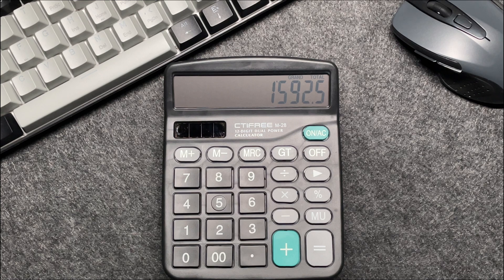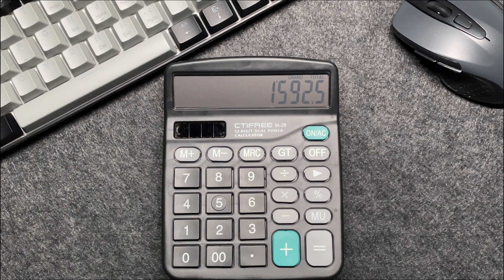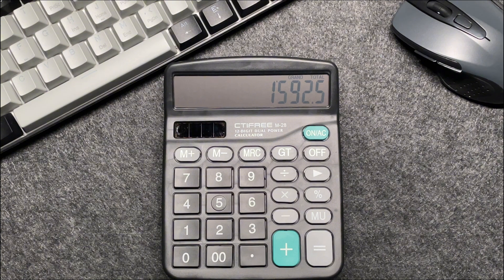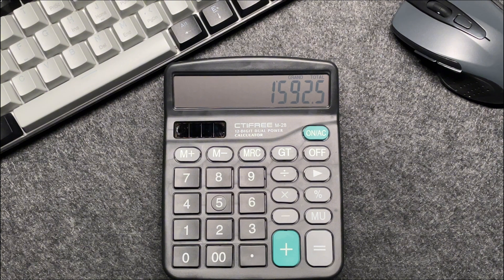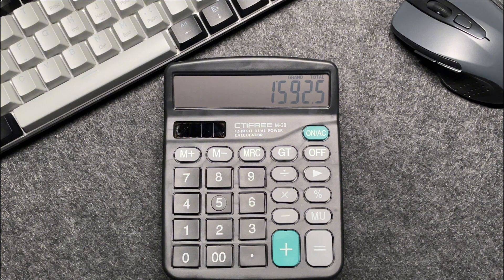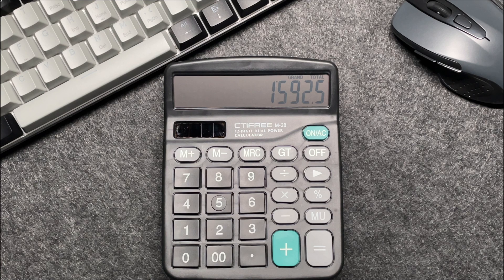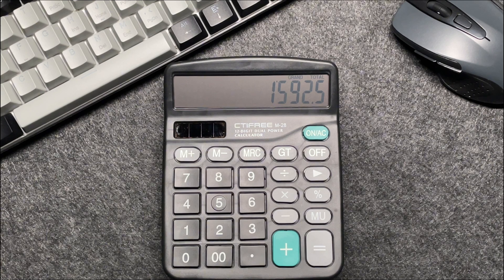And there you have it folks, a fast and easy way to calculate 35% off a price using your calculator. If you found this video helpful, please give it a thumbs up and don't forget to subscribe to my channel for more quick tips and tricks. Thanks so much for watching and I'll see you in the next video.